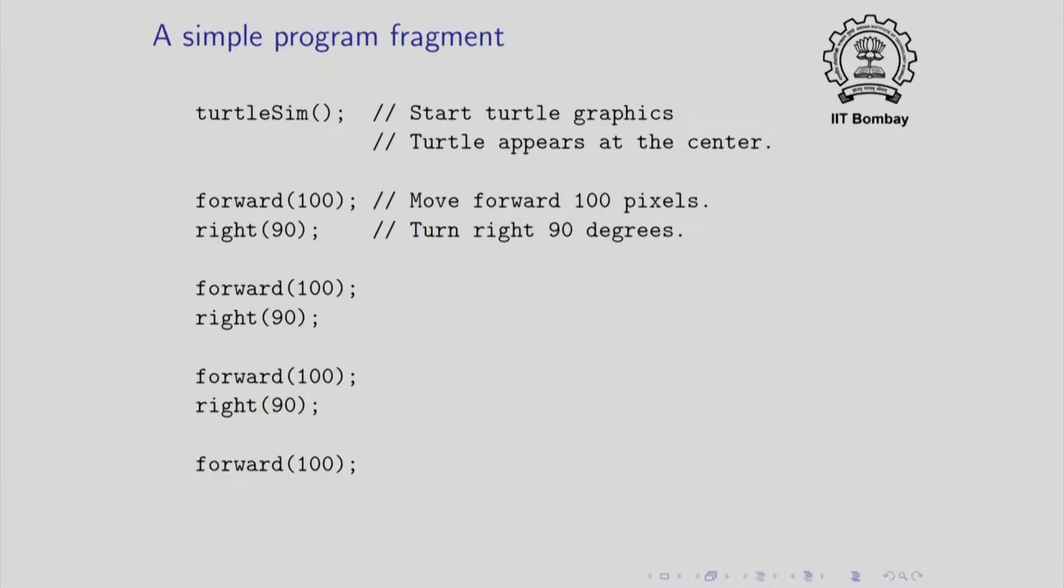Let me begin with a direct introduction. Here is a very simple program fragment which will draw something on the screen and I will have you guess what it is. The first command is turtle sim. This merely says start the turtle graphics functionality. This will cause a window to appear on the screen and inside that the turtle which is just a small triangle will appear at the center. Forward hundred as you might guess will cause the turtle to move hundred pixels forward. Right will cause to turn right. The arguments applied to right decides by how many degrees the turtle is to turn. So in this case, we are asking the turtle to turn 90 degrees.